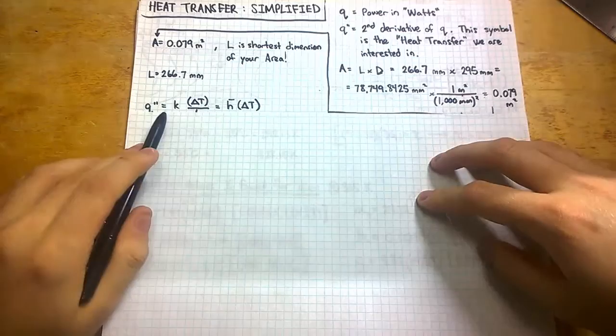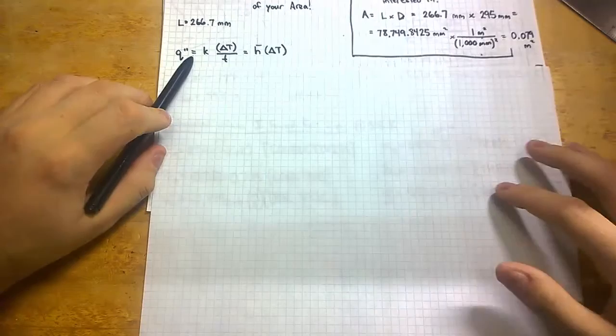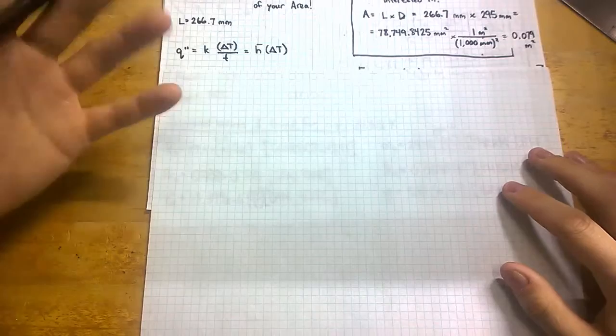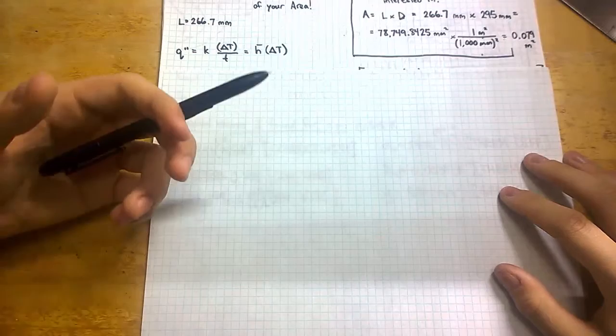Now that we have our area, and I've mentioned that L is the shortest dimension of your area, we are going to move to the actual equation of heat transfer. Heat transfer can be displayed in two different parts. There's a third part, which is going to deal with radiation. However, we're considering that to be negligible.